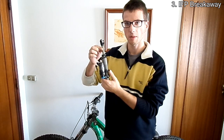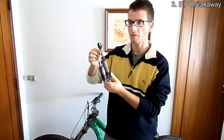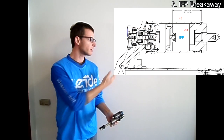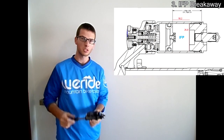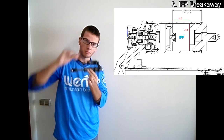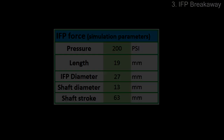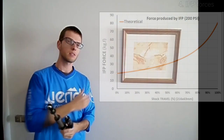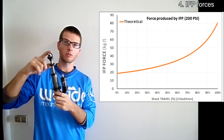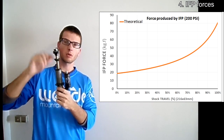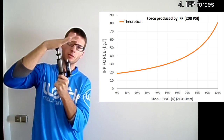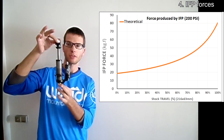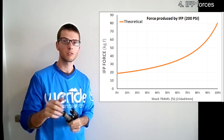Let's do the math. Since I have the technical drawings of this particular shock, I can know exactly the volume of the IFP chamber with great precision. As you can see from the graphs, I need about 80 kilograms of force to fully compress this damper. To confirm this theoretical graph I will measure the damper force in reality and compare it with the theoretical values.